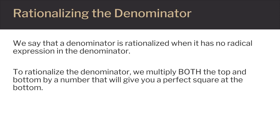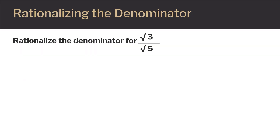Another common operation on radicals is rationalizing the denominator. A denominator is rationalized when it has no radical expression in the denominator. To rationalize the denominator, we multiply both the top and the bottom by a number that will give you a perfect square on the bottom.